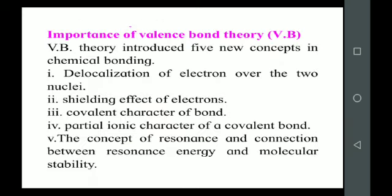Now let's see the importance of valence bond theory. First is the delocalization of electrons over the two nuclei — whenever two atoms form a covalent bond, the shared electron pair can be delocalized or equally shared between the two nuclei. Second is the shielding effect of electrons: when two orbitals overlap to form a covalent bond, the electron density between the two nuclei increases, causing greater shielding, less repulsion, and maximum overlap.